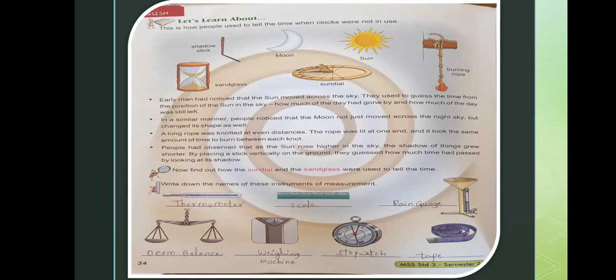Exercise part. Write down the names of these instruments of measurement. The first one: thermometer. Second one: scale. Third one: rain gauge. Fourth one: beam balance. Fifth one: weighing machine. Sixth one: stopwatch and tape.